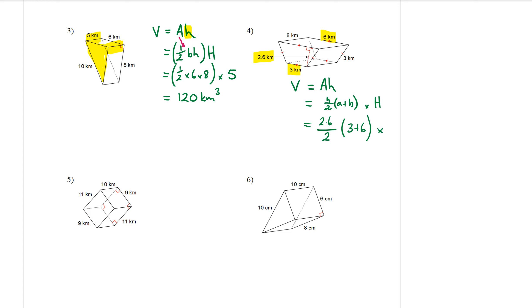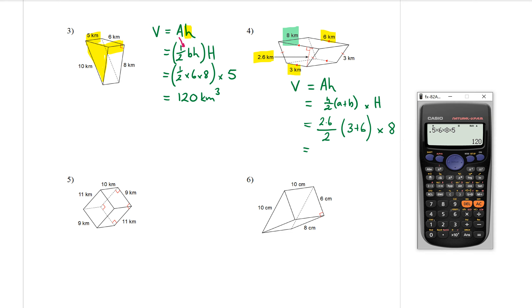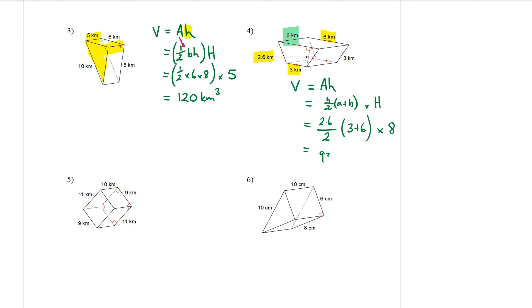Then multiply by the height of the prism going backwards, which is eight kilometres. On the calculator: 2.6 divided by two, times bracket three plus six, close bracket, times eight. The answer is 93.6 kilometres cubed.